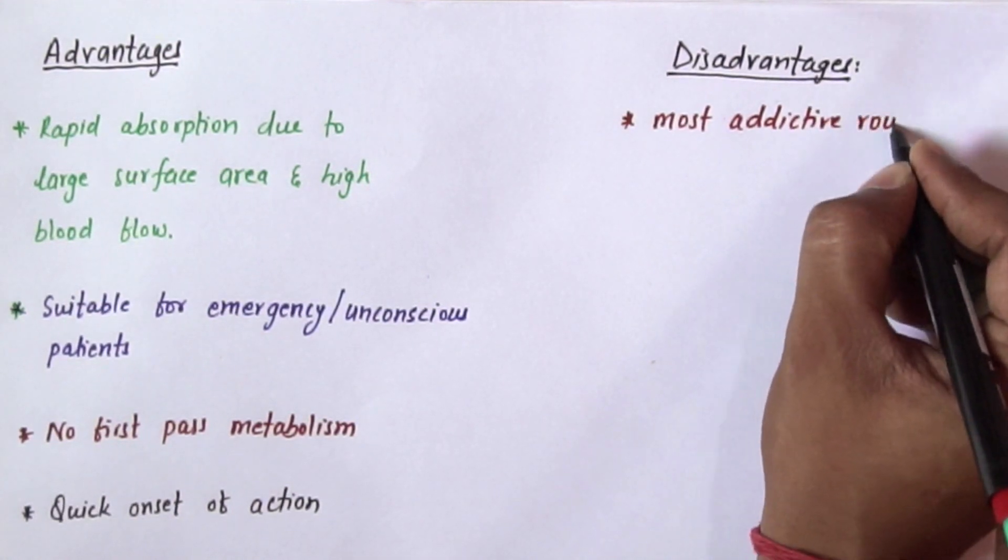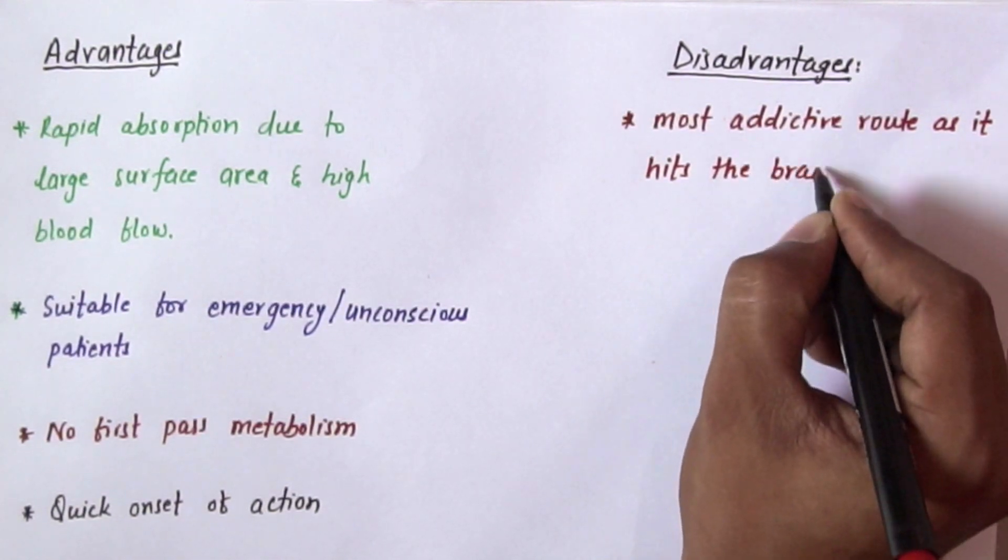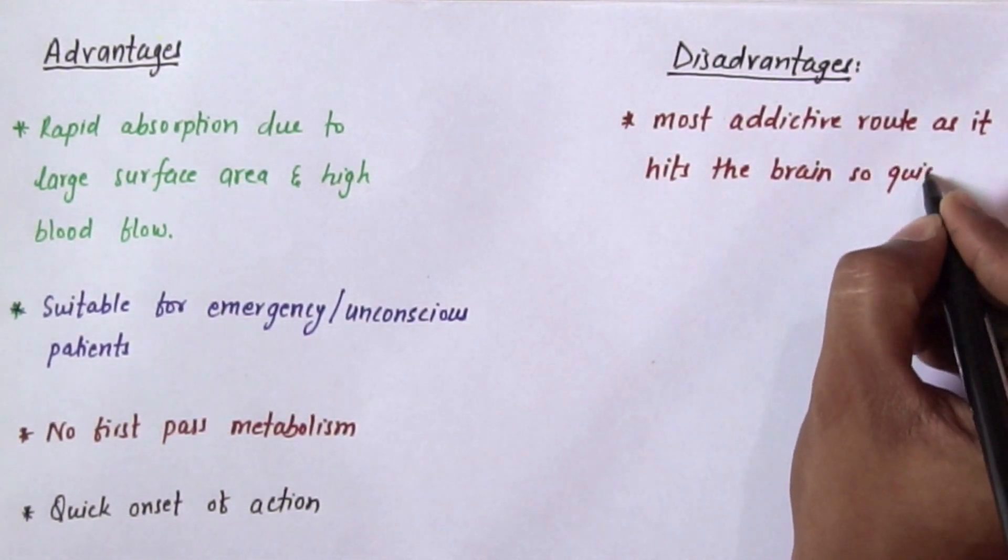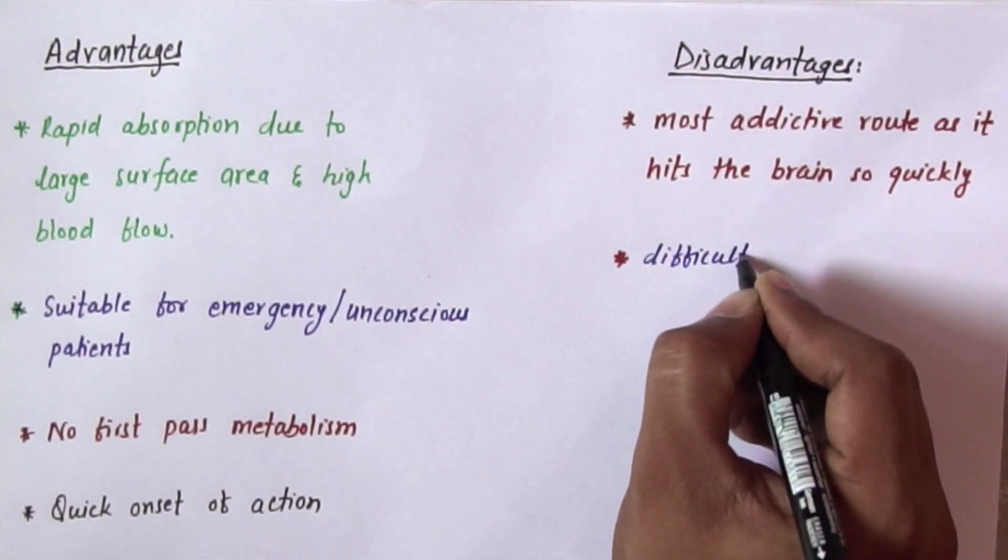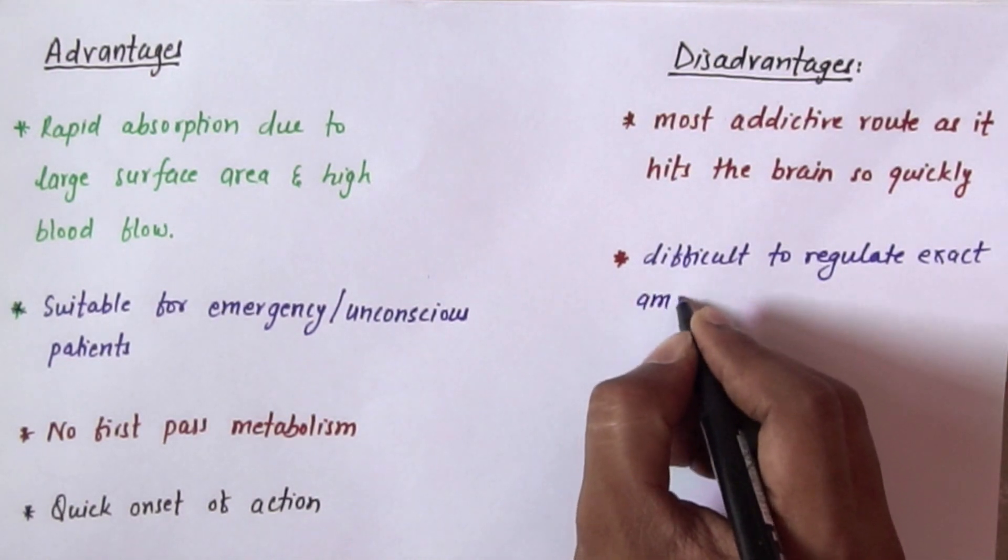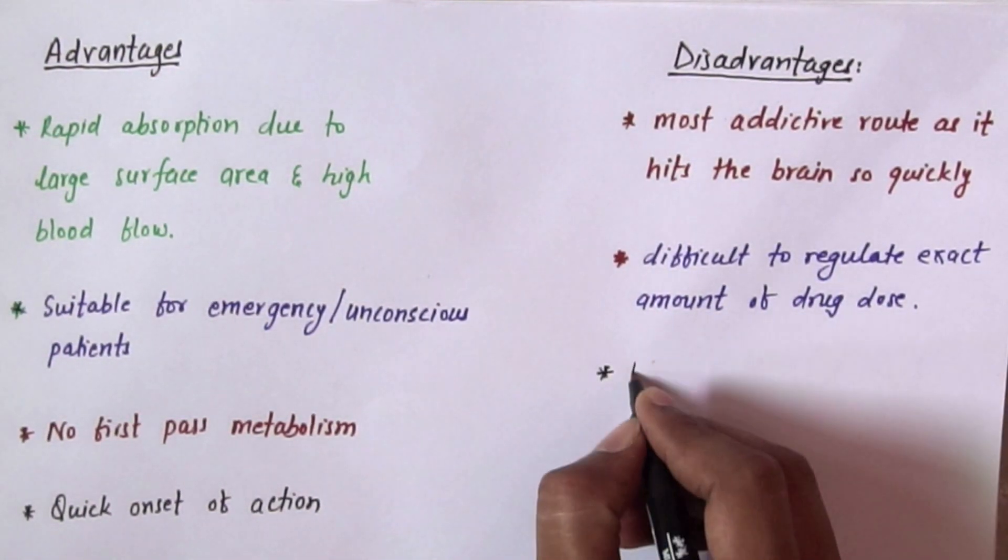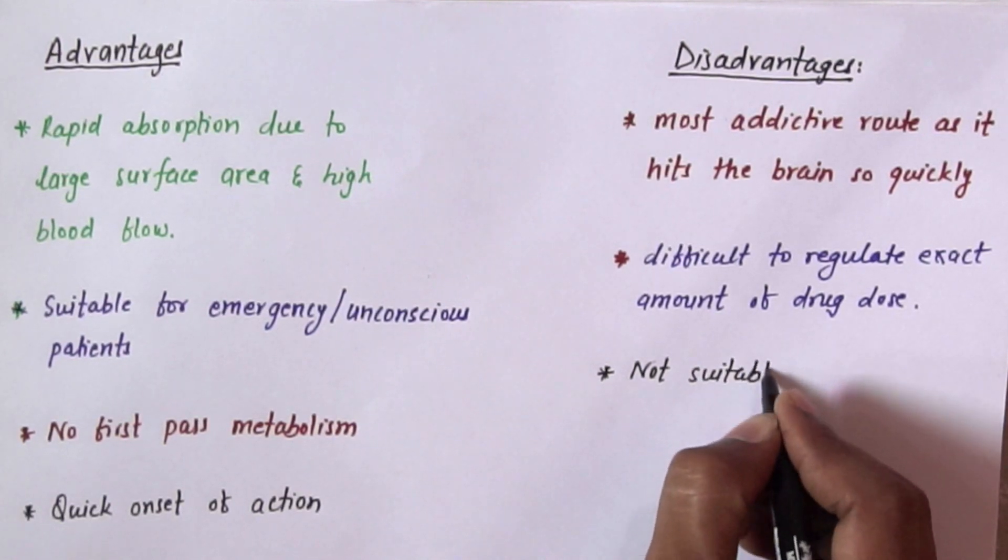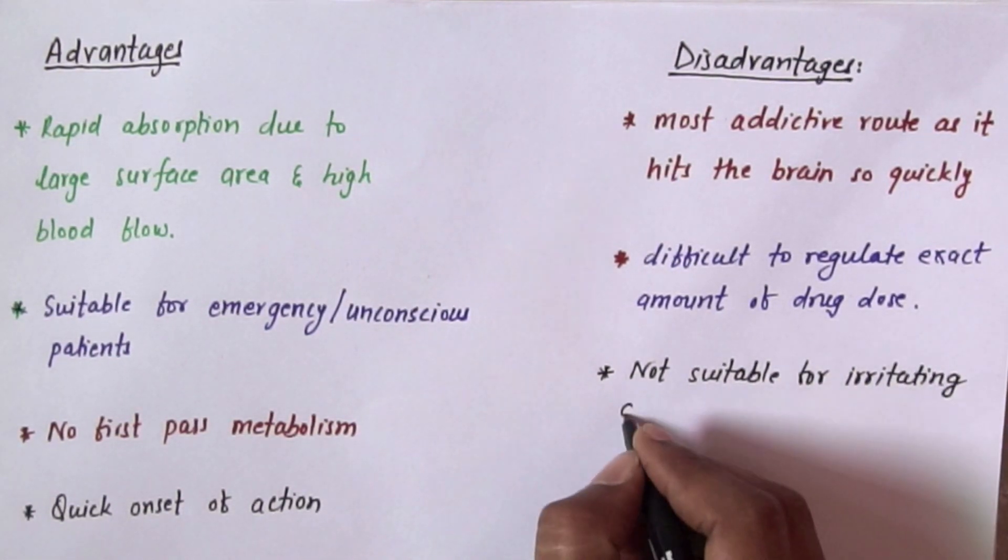Now coming to disadvantage, most addictive route as it hits the brain so quickly. So there will be chance of addiction. Now it is difficult to regulate exact amount of drug dose. So very difficult to regulate it. Not suitable for irritating drugs.